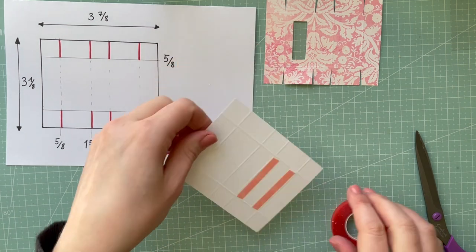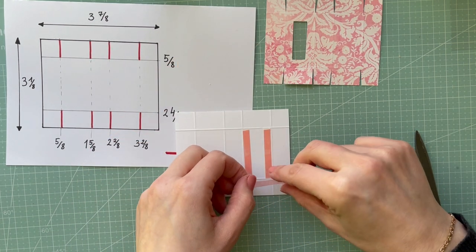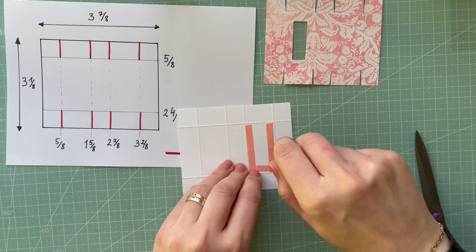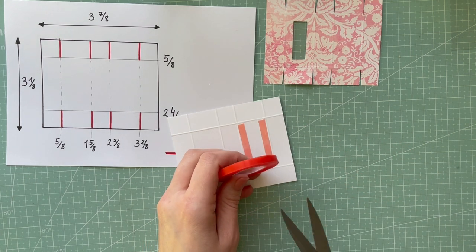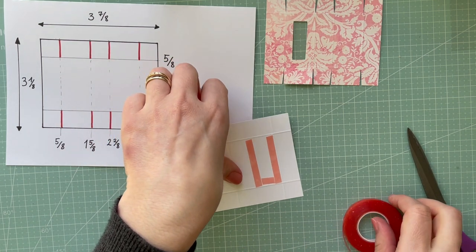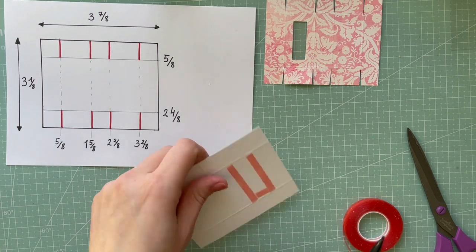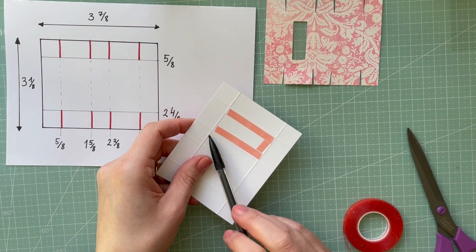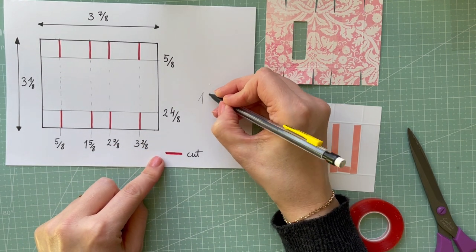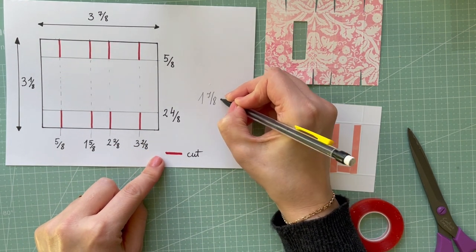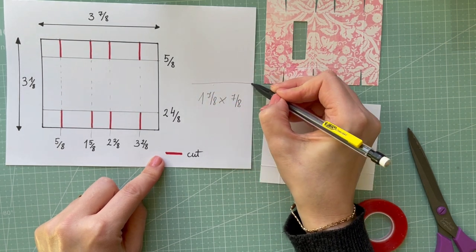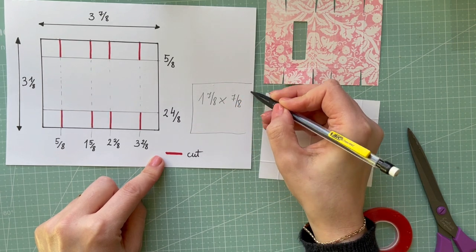We can make those slits in that box, and of course you need the small acetate as well. So my piece of acetate will measure roughly, because it all depends what kind of bone folder you have, it's about 1 and 7/8 by 7/8 of an inch. That's for the acetate.